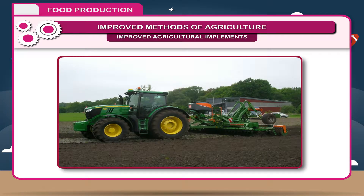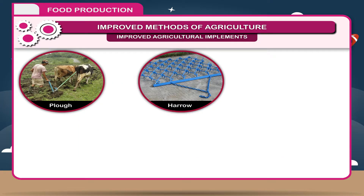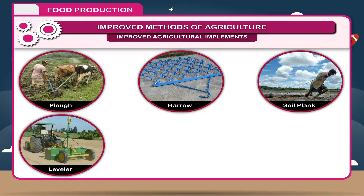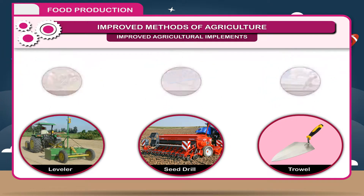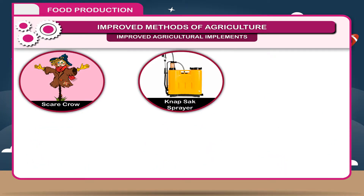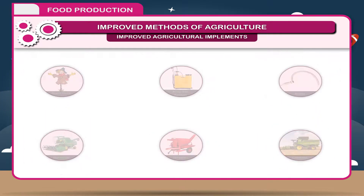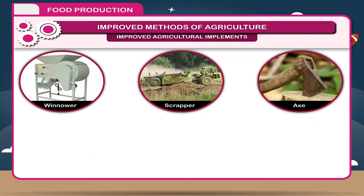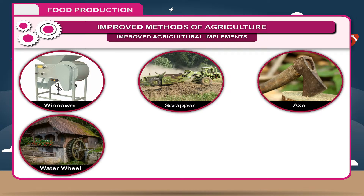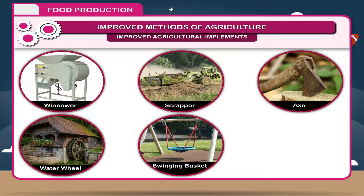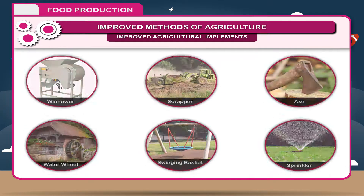Tractor is a multi-purpose implement which is a boon for agriculture. Other important implements are plough, harrow, soil plank, leveller, seed drill, trowel, scarecrow, knapsack sprayer, sickle, harvester, thresher, combine, winnower, scrapper, axe, water wheel, swinging basket, sprinkler, etc.